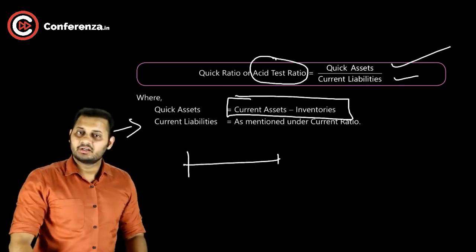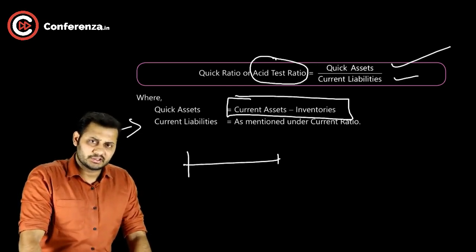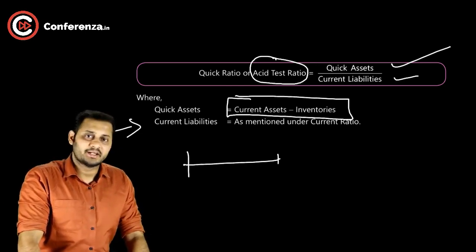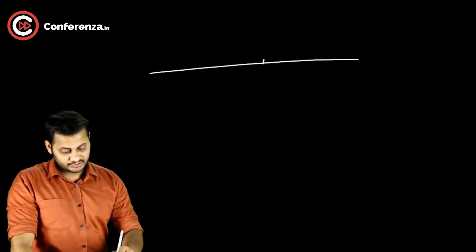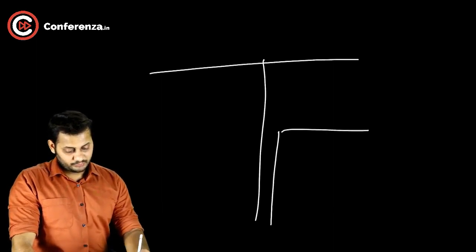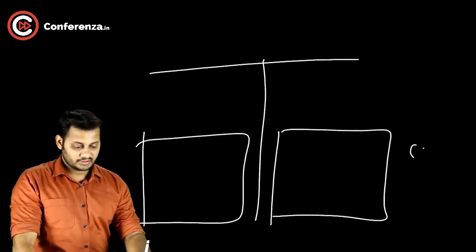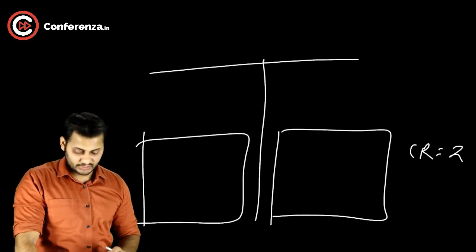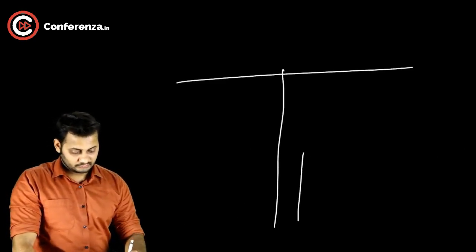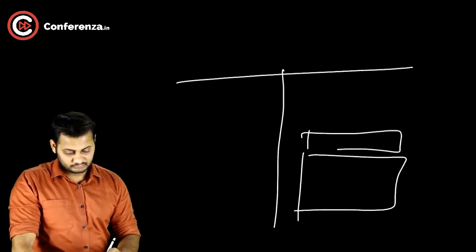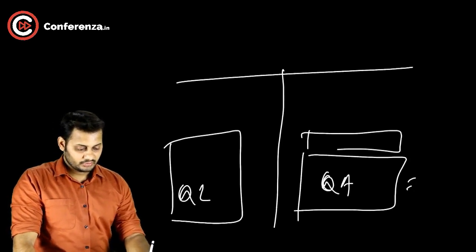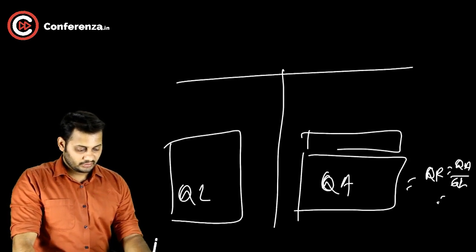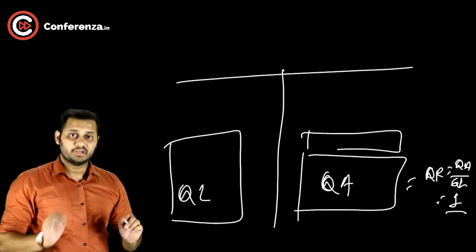So the quick ratio formula is: quick assets divided by quick liabilities. Looking at the balance sheet, the current ratio standard is 2:1, meaning for every 1 rupee of liability there should be 2 rupees of current assets. The quick ratio standard is 1:1 — for every 1 rupee of liability, 1 rupee of quick assets should be available.